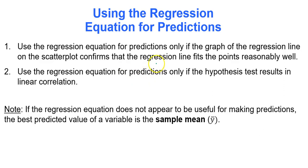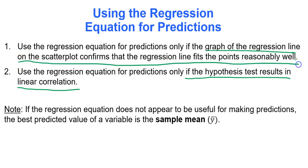We can use the regression equation for predictions only if the graph of the regression line on the scatter plot confirms that the regression line fits the points reasonably well, and that the hypothesis test results in linear correlation. We have to look at the graph of the regression line on the scatter plot to make sure it fits the points reasonably well, and then we also need to make sure we check that there is linear correlation based on the hypothesis test. That's the big thing.